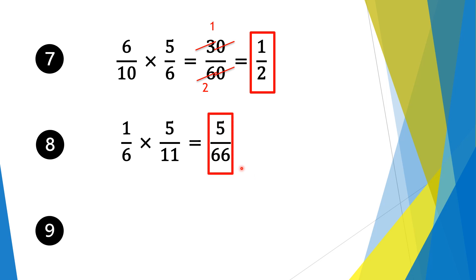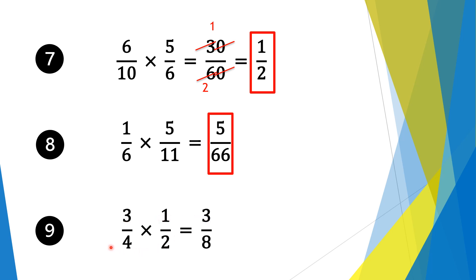Moving on to question 9, our last question. We have 3/4 times 1/2. Again, we multiply the numerators first: 3 times 1 is 3. And then we times the denominators: 4 times 2 is 8. So our solution is 3 over 8.